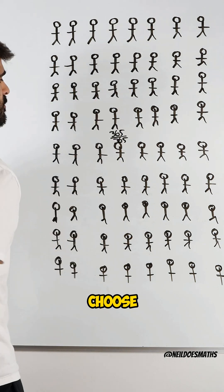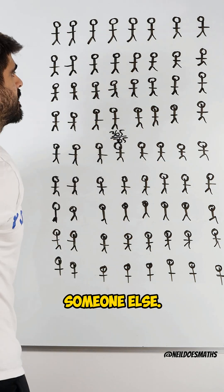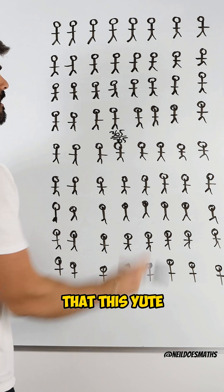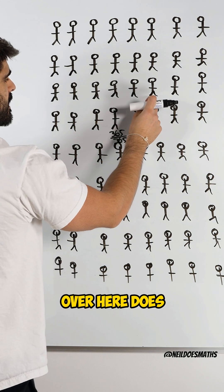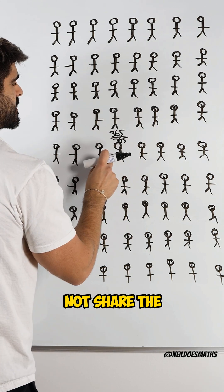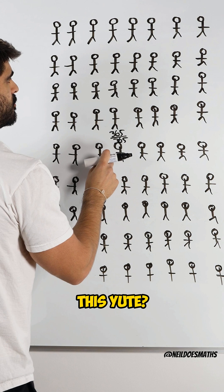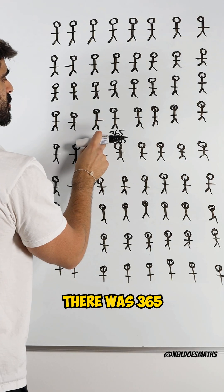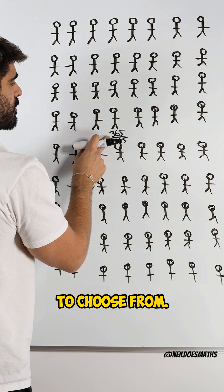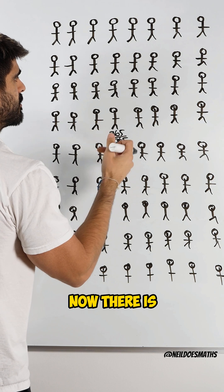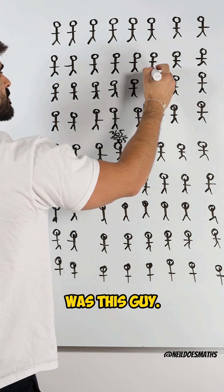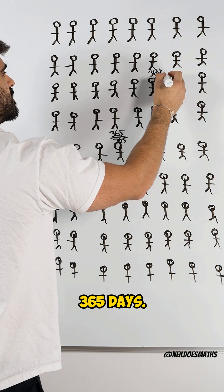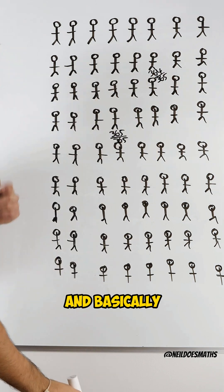Now we're going to randomly choose someone else. What's the probability that this person does not share the same birthday as the first? Well, there's one less birthday to choose from — there were 365 to choose from, now there is one less. So it's 364 out of 365 days.